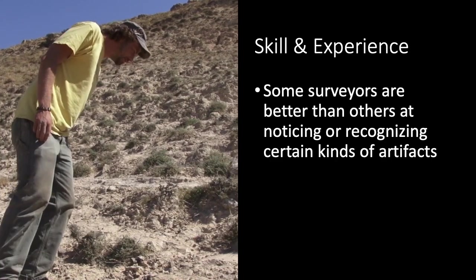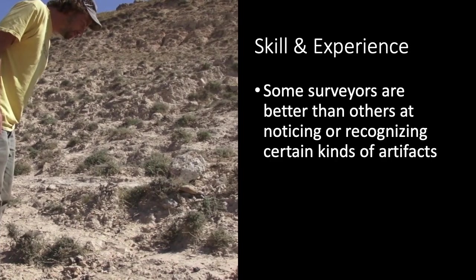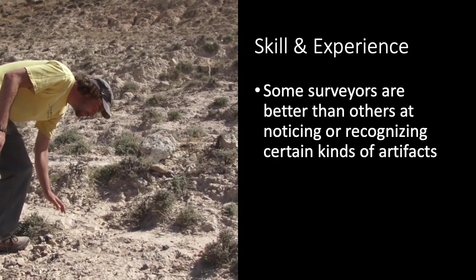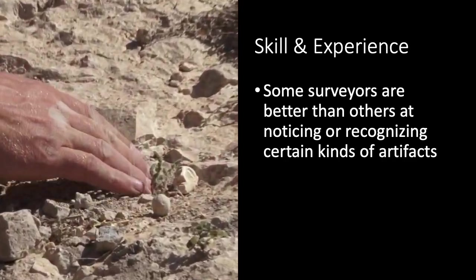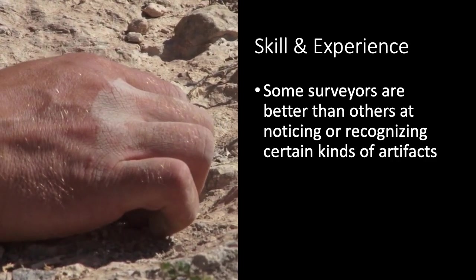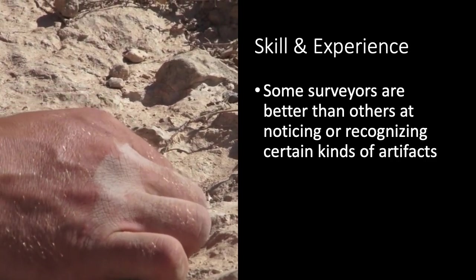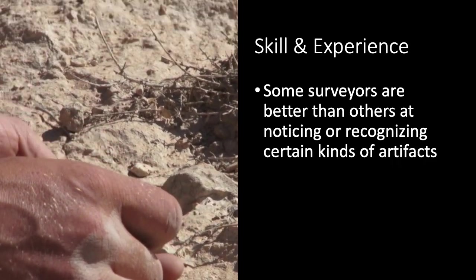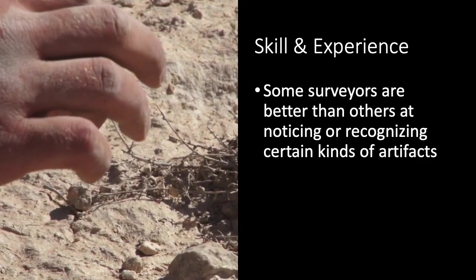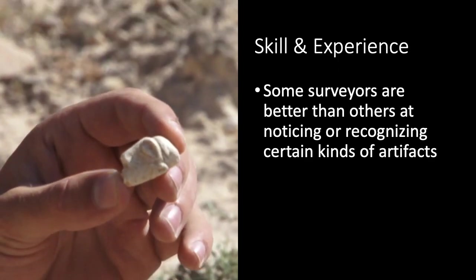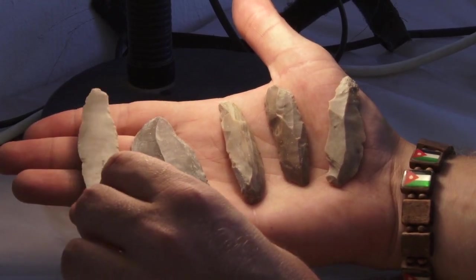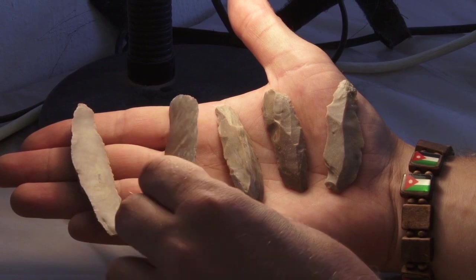Just like any other kind of detector, human surveyors vary in their effectiveness. Some are really good at finding pottery but don't know enough about lithics to identify them consistently. Others may be excellent detectors of lithics but not very good at finding coins or beads. For this and other reasons, it's a good idea to have a survey team that has a mix of expertise and to train surveyors in the identification of the kinds of artifacts you'd expect to find on the survey.